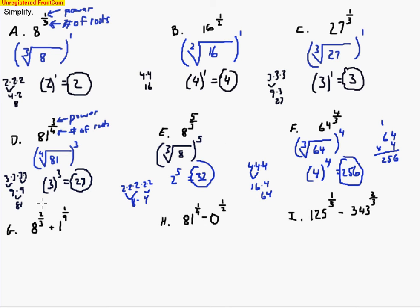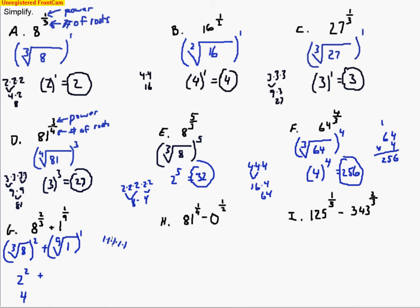The next few problems involve two steps — figuring out two fractional exponents and then adding or subtracting them. First: 8 to the 2/3 power. Three numbers that multiply to make 8, raised to the second power. Even number, try even numbers — we saw that was just 2. Squaring that gives 4. Over here, we're looking for 9 numbers that make 1, raised to the first power. Those 9 numbers are just 1s, and no matter how many 1s, the answer is 1. So 1 to the first power is 1. Adding those two answers together gives a final answer of 5.